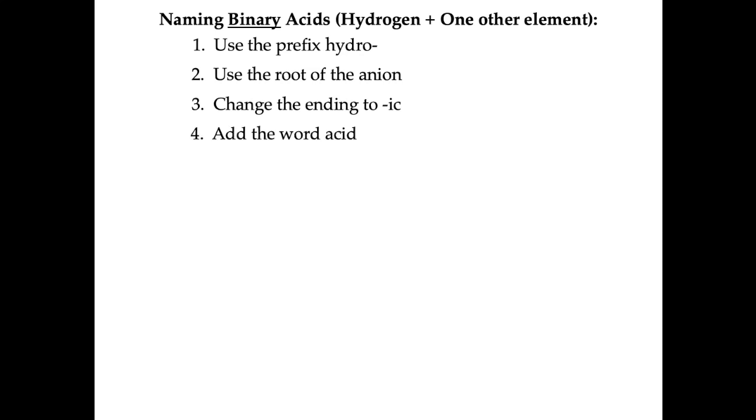First, let's talk about how to name binary acids, where a binary acid is where you have a hydrogen with just one other element. First, you're going to add the prefix hydro. Then you'll write the root of the anion. And you'll change the ending of the anion to IC. And lastly, you'll just add the word acid on to the end.